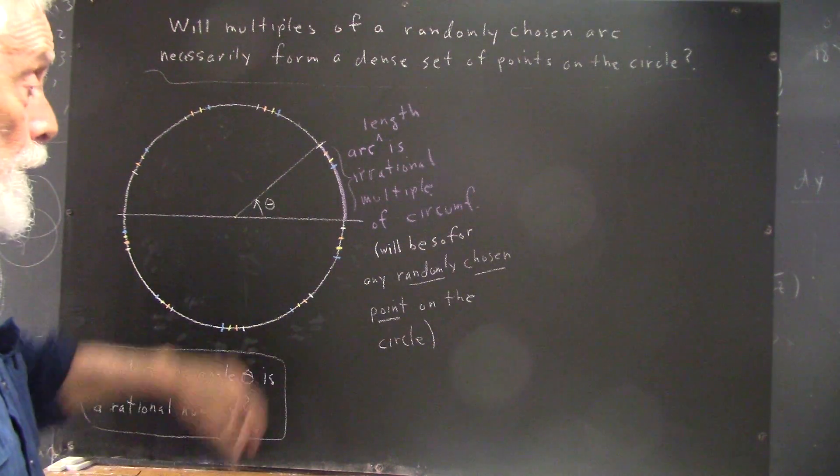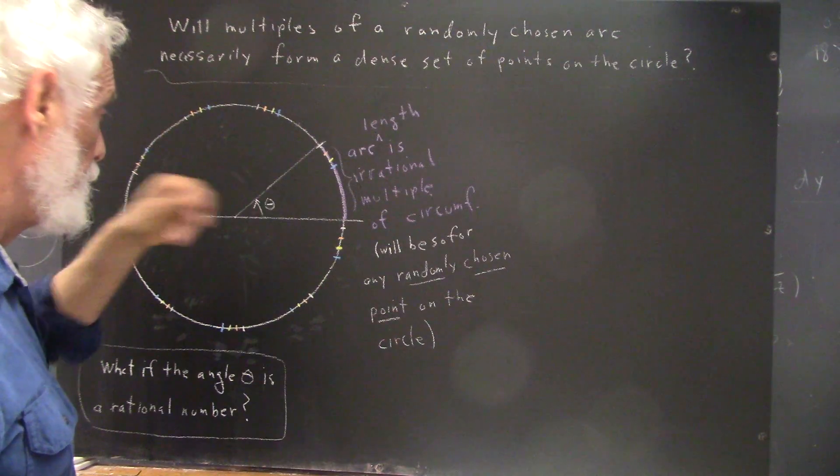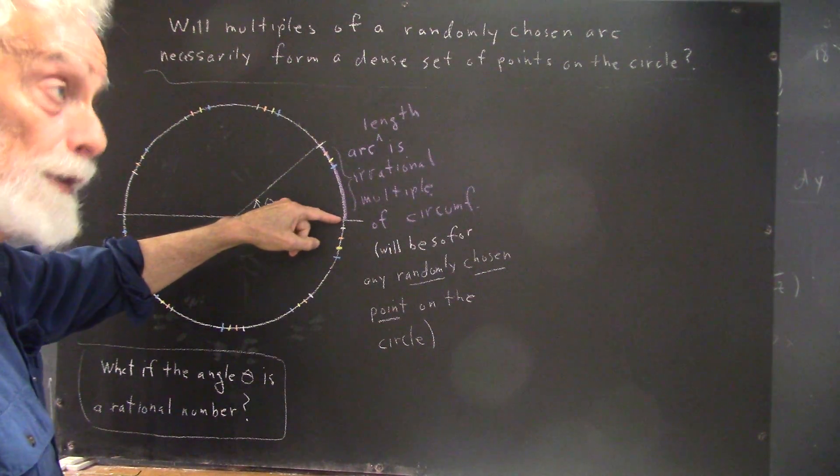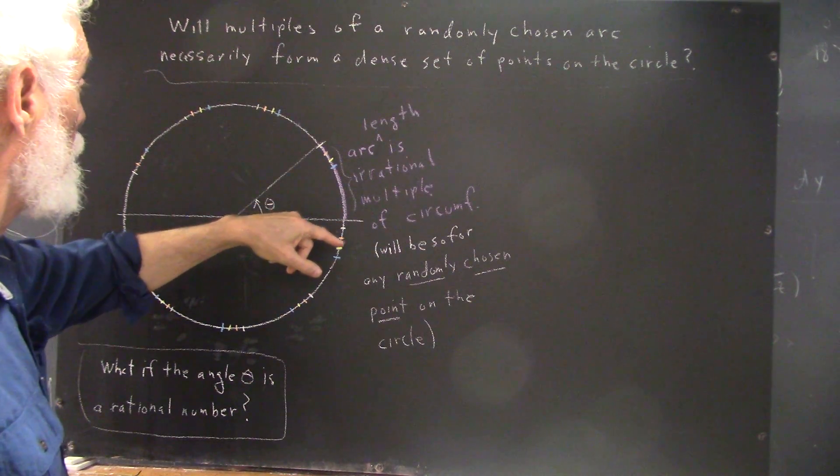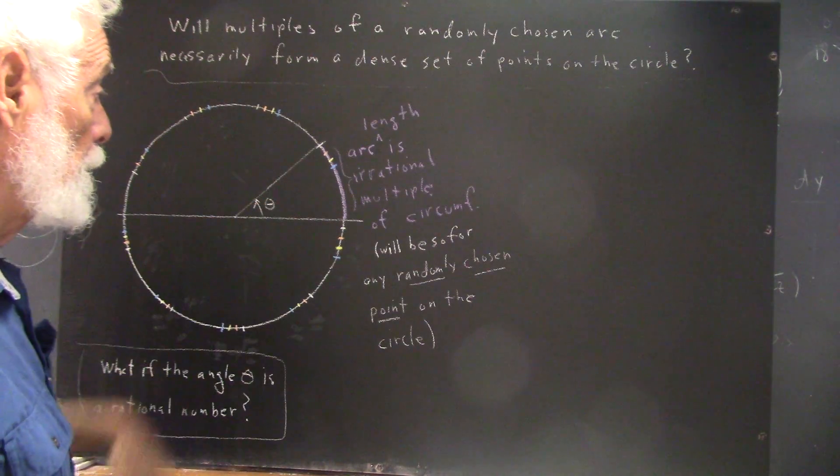You can prove that if this arc is an irrational multiple of the circumference, then it's impossible that we'll come around to the starting point on the circle by marking arcs along the circle. Not only that,